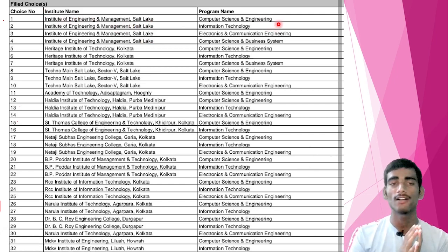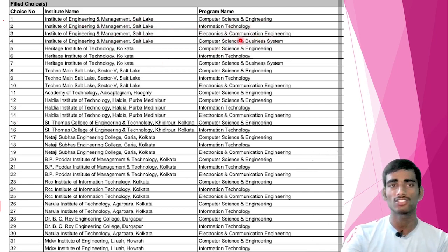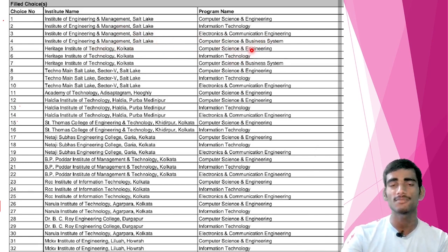If you want to get Haldiya, then you have to give Haldiya first. So I have given Haldiya first — Computer Science (CSC), then IT, then Electronics and Communication (EC). After that, IEM — Institute of Engineering Management — with Computer Science and Business Systems (CSBS) as the fourth priority, only if you are interested in business systems. Then the next top college: Heritage Institute of Technology Kolkata.